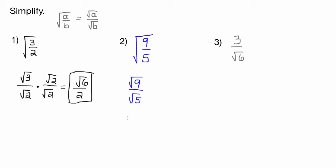So we can rewrite this as the square root of 9 over the square root of 5. Now the square root of 9 actually equals 3, which is convenient. And then square root of 5, we can't simplify that at all. It's just square root of 5.